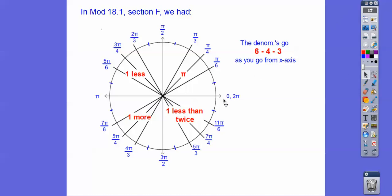When it's in radians, look at the denominators — they all go 6, 4, 3. Away from the x-axis: 6, 4, 3. The same pattern repeats in every quadrant. This is pi over 6, pi over 4, pi over 3.